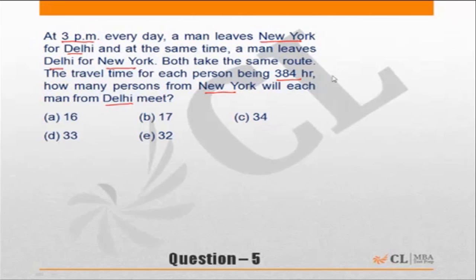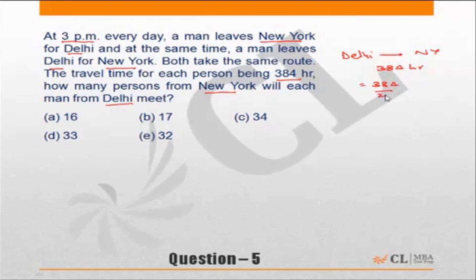As per the question, the time taken to cover the distance from Delhi to New York is 384 hours, which is 384 divided by 24, equal to 16 days. So it takes 16 days for a person to cover the distance from Delhi to New York and vice versa.